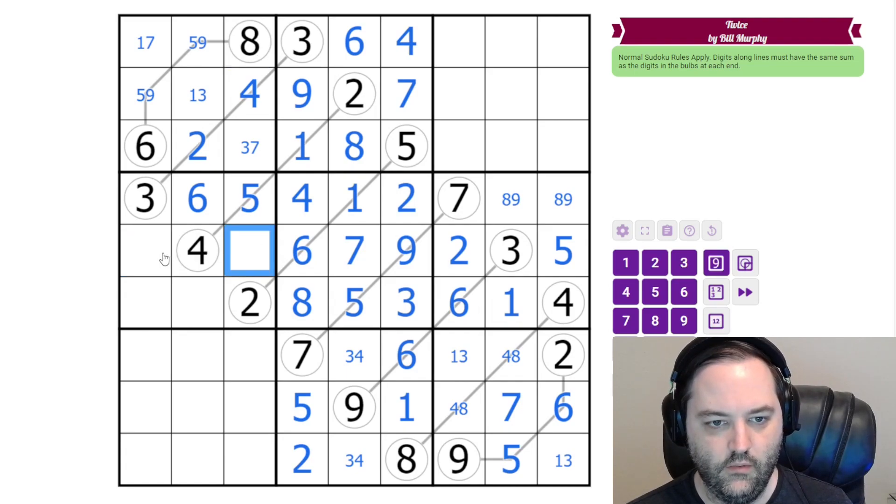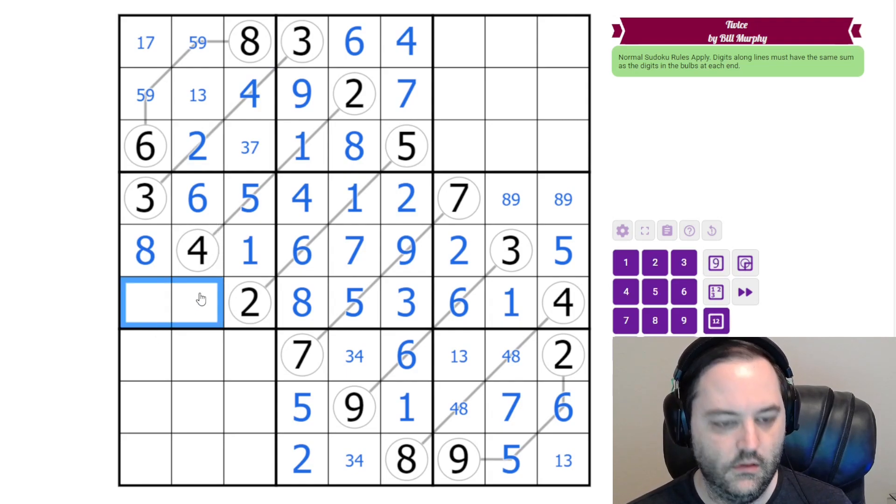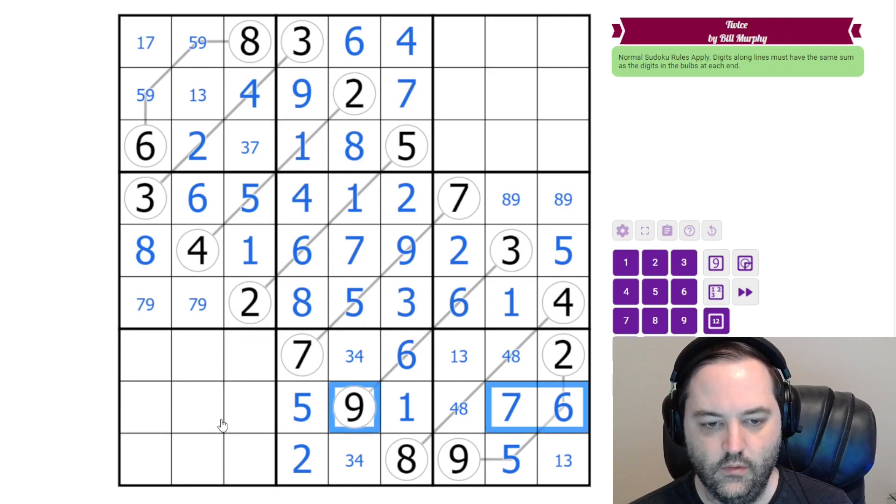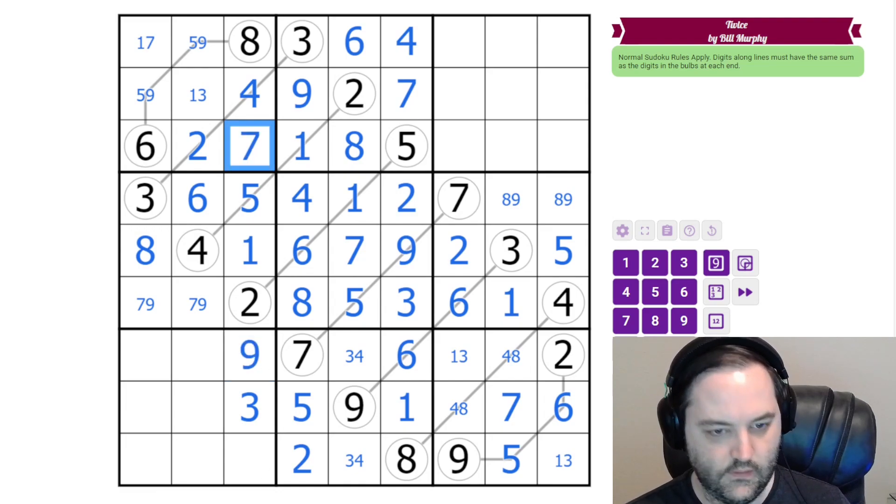Here we need one and eight. We've got an eight up here. Here we need seven and nine. We need three, six, seven, and nine here. Three of them are right here. That's three. Six and seven are here. So that's nine. This is seven, and this is six. We still need a one, three, four, seven here. Still need a two here.